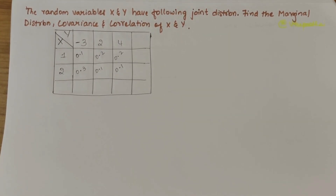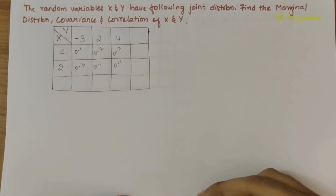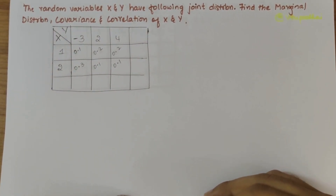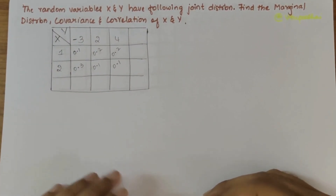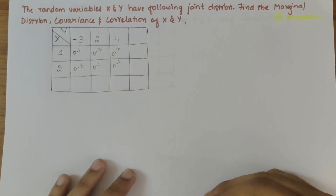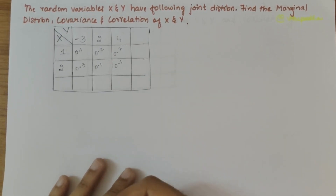In this video, we'll be solving a numerical related to the joint distribution. The problem statement says that the random variables x and y have the following joint distribution. We have to find the marginal distribution firstly, and then the covariance and correlation of x and y.